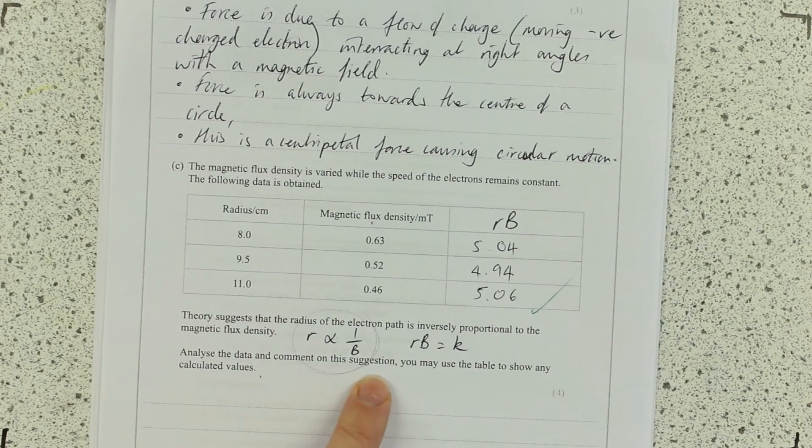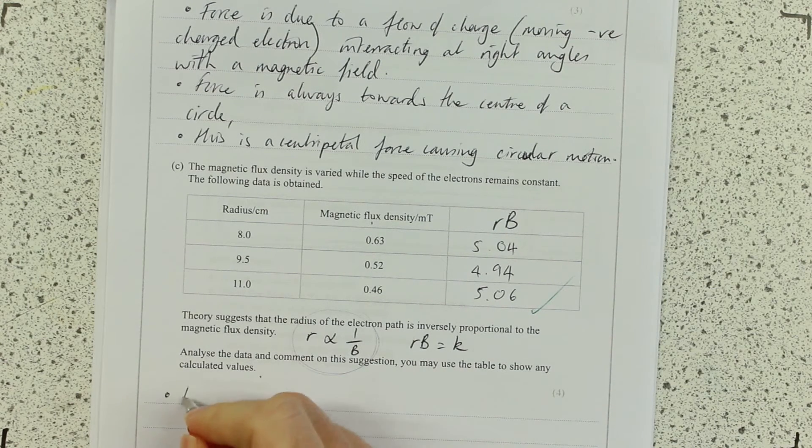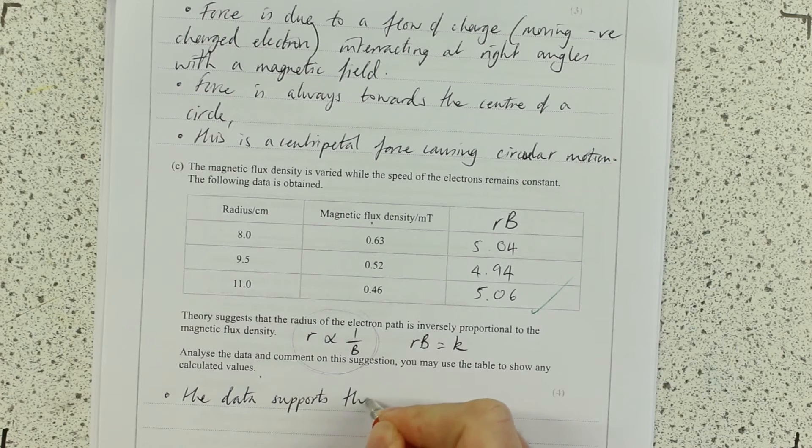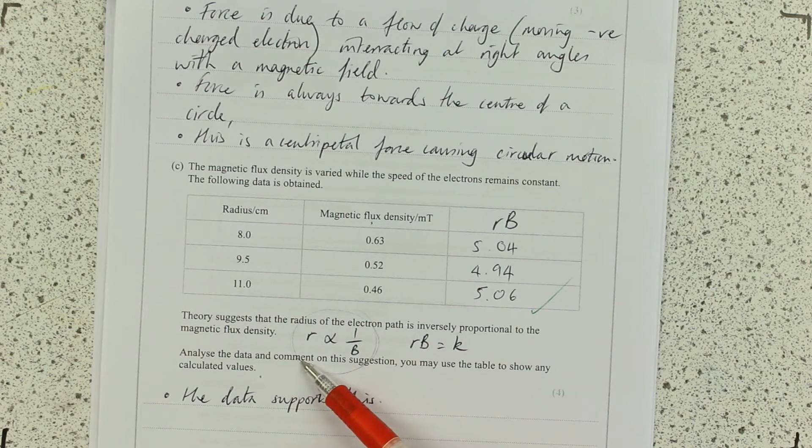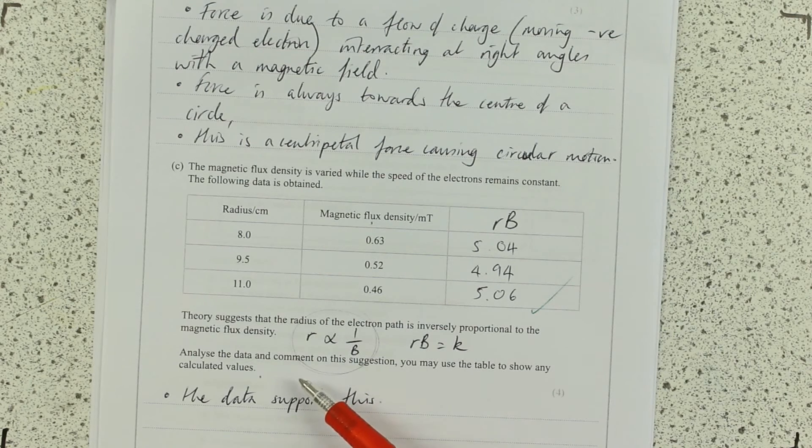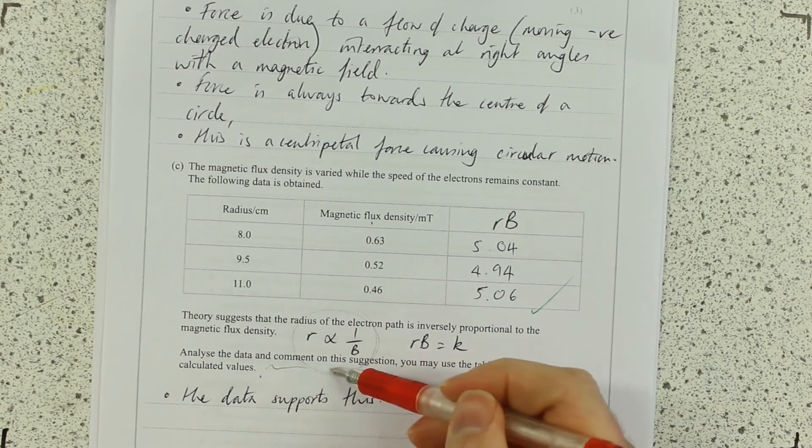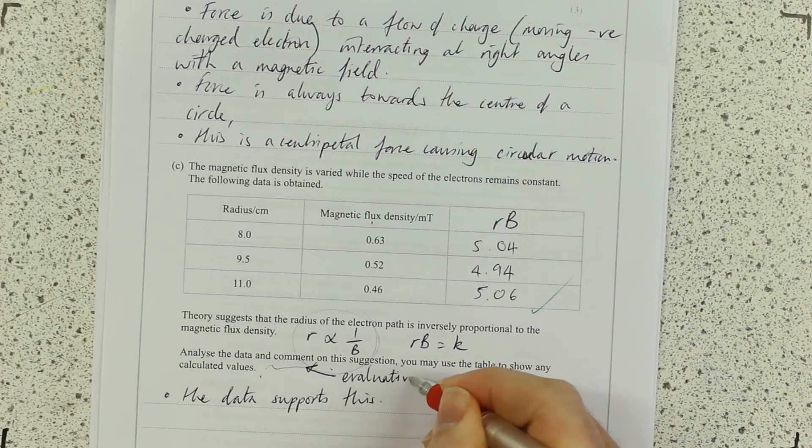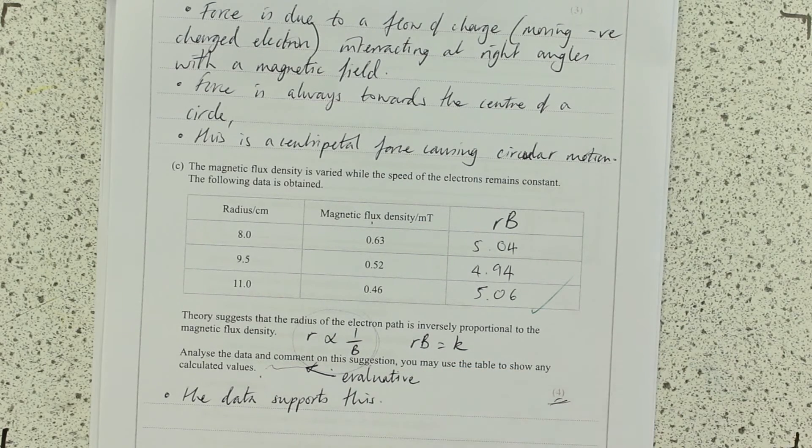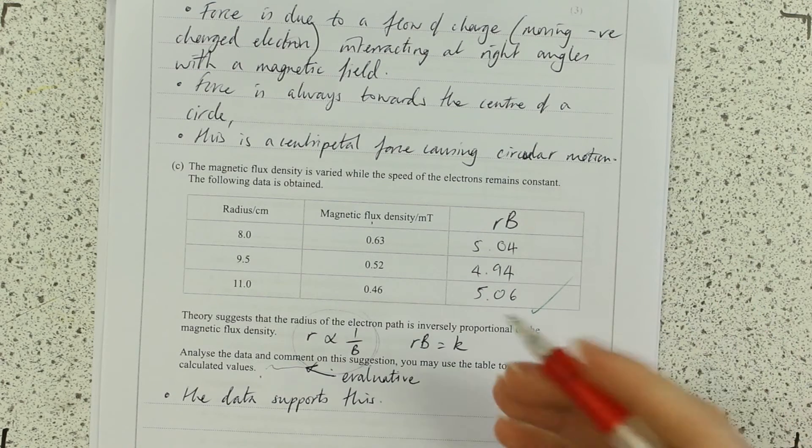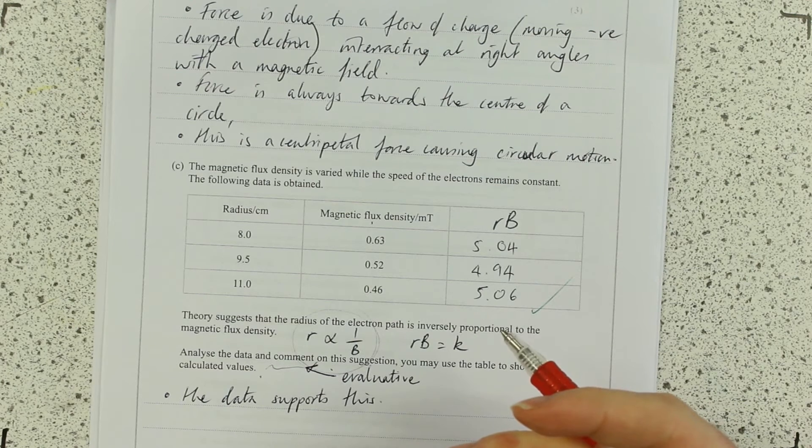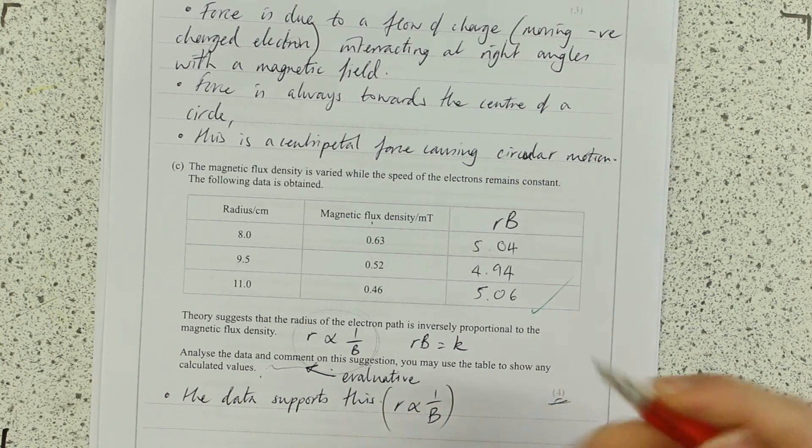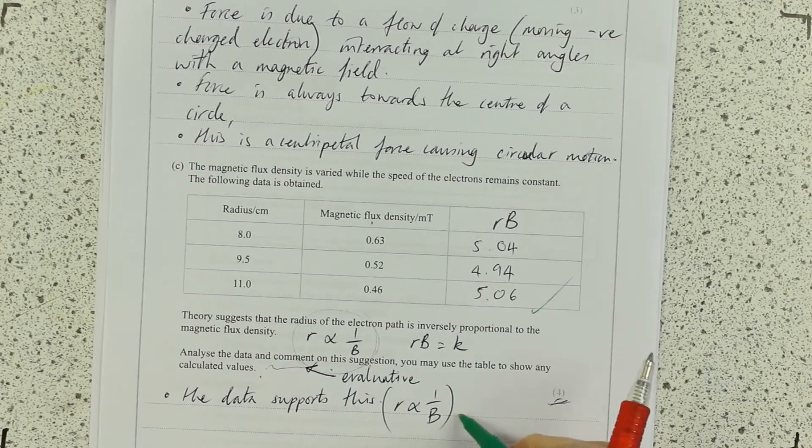Analyse the data, comment on this suggestion. I would firstly have suggested the data supports this. It says comment on the suggestion. It doesn't really give me a clue what type of comment it's going to be. It actually is looking for an evaluative comment. But I guess at the end of the paper, when I'm searching for four marks, I'm probably thinking analysing data gives some evaluative points. The data supports this. R is inversely proportional to B.